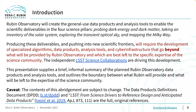The Rubin Observatory's LSST science pipelines will create the general use data products and analysis tools which will enable scientists to produce the expected science deliverables in the four science pillars: probing dark energy and dark matter, taking an inventory of the solar system, exploring the transient optical sky, and mapping the Milky Way. The general use data products and analysis tools incorporate algorithms and software that have been designed, built, and validated by the global astronomical community, and represent an accumulation of shared knowledge and expertise.